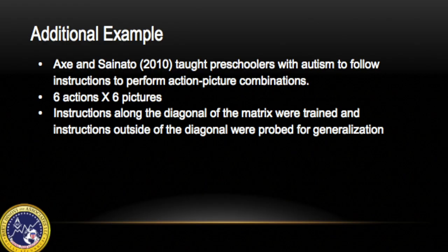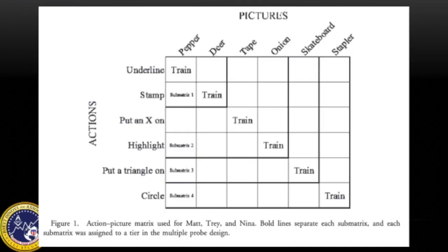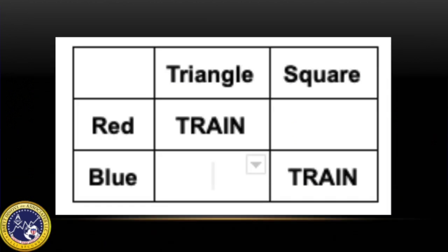Another example can be found in Axe and Sainato's article regarding matrix training. They taught preschoolers with autism to follow instructions to perform action-picture combinations. There were six actions on one axis and six pictures on the other axis. The instructions along the diagonal of the matrix were trained and instructions outside of the diagonal were probed for generalization. This study demonstrated that matrix training is an efficient and effective approach when teaching language and literacy skills.